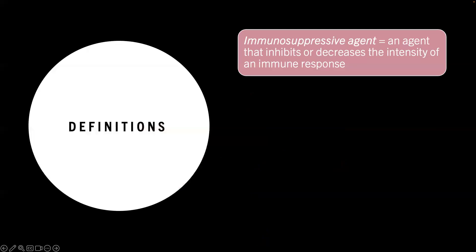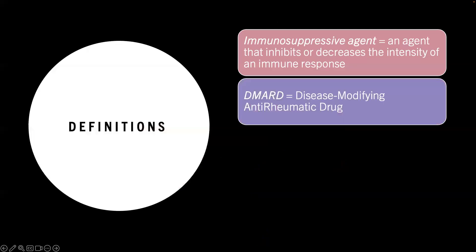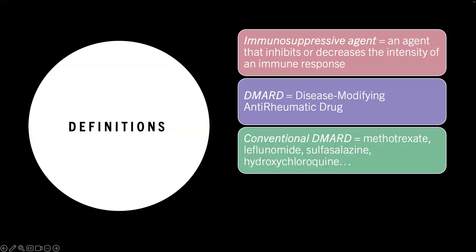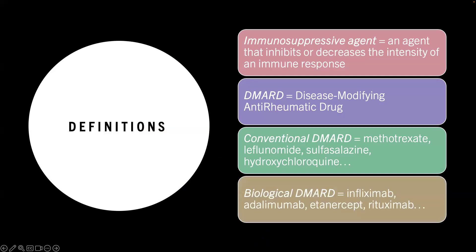To expand on the definitions: a DMARD is a disease-modifying anti-rheumatic drug. We can divide these into conventional DMARDs — developed before the era of biologics — which include methotrexate, leflunomide, sulfasalazine, and hydroxychloroquine. Then there are biological DMARDs, such as infliximab and adalimumab, which we'll go through in detail.